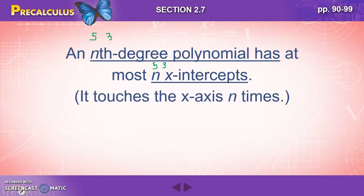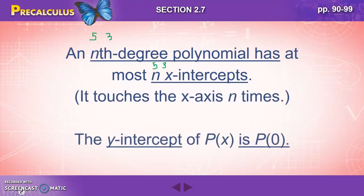It touches or crosses the x-axis n times. The y-intercept of p(x) is p(0). So if you want to know the y-intercept, just like in a linear equation, if you put zero in for x, it will tell you what your y-intercept is.